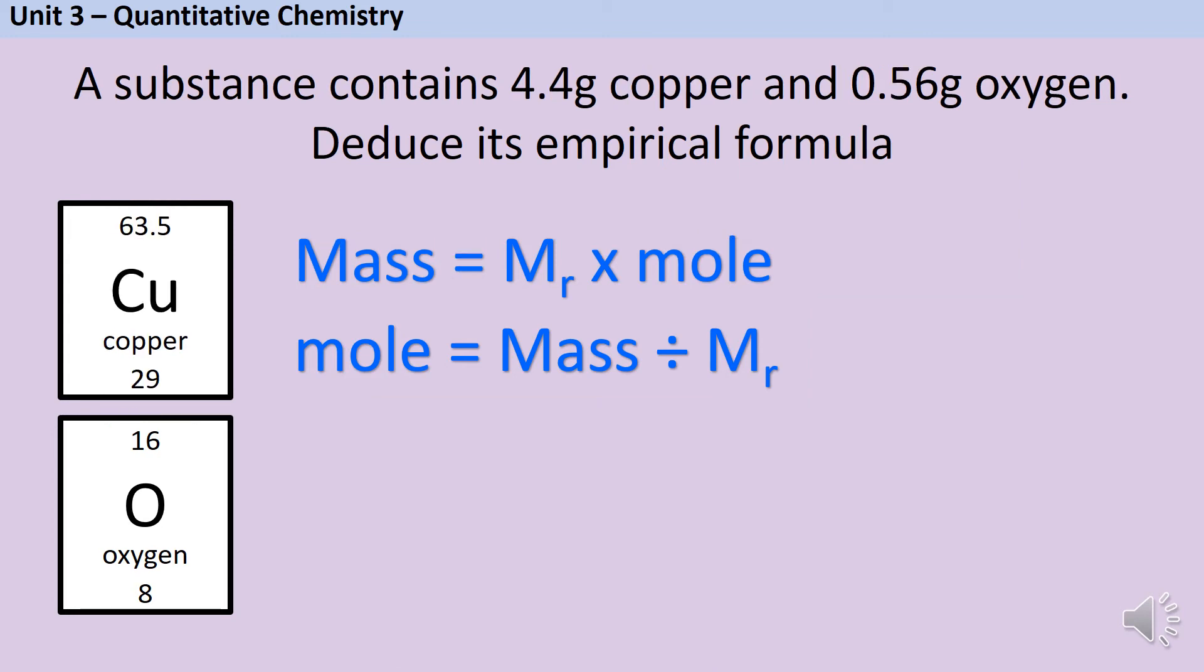Sometimes you're going to get instances where the numbers don't work out as perfectly as in the previous example. This is pretty unusual for GCSE and A level because in most other examples of quantitative chemistry the examiners fudge the numbers to make sure answers are nice and straightforward, but for empirical formulae they often don't. So let's have a look at a question that is a little bit more tricky.